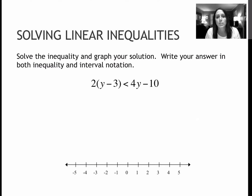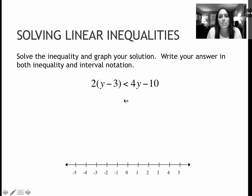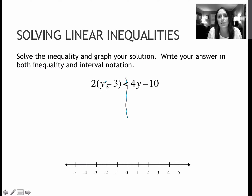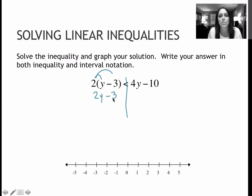This one's a little bit more difficult, but again, we're solving these the same way we did when we had an equals sign there instead. On this side, I'm going to distribute that 2, which gives me 2y minus...